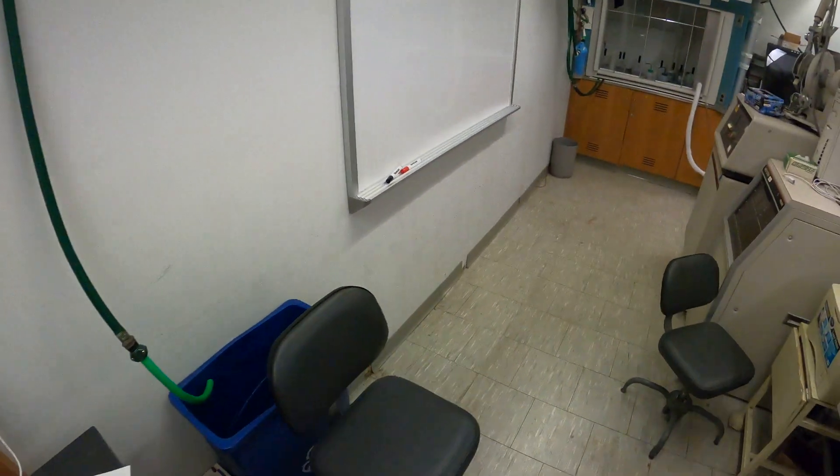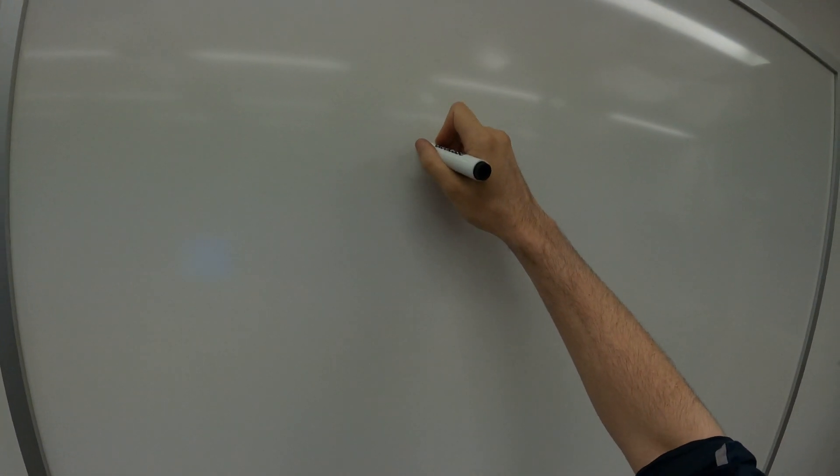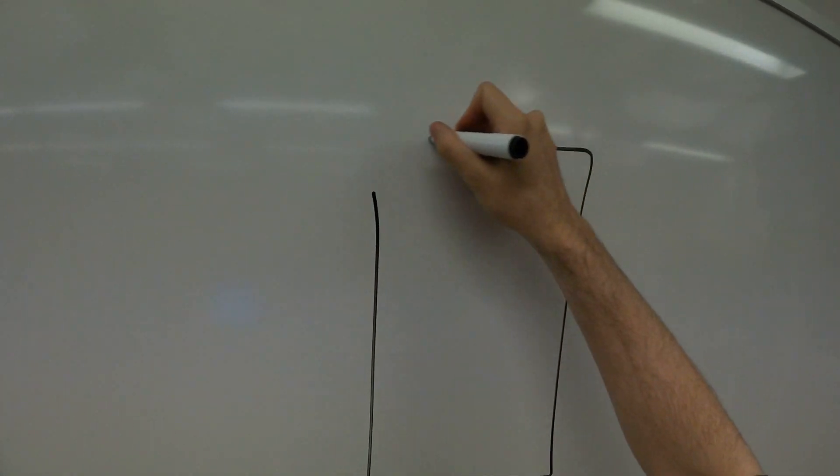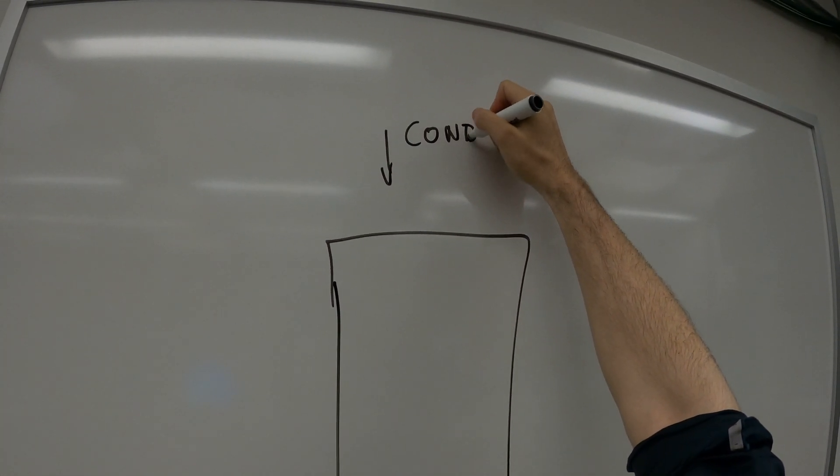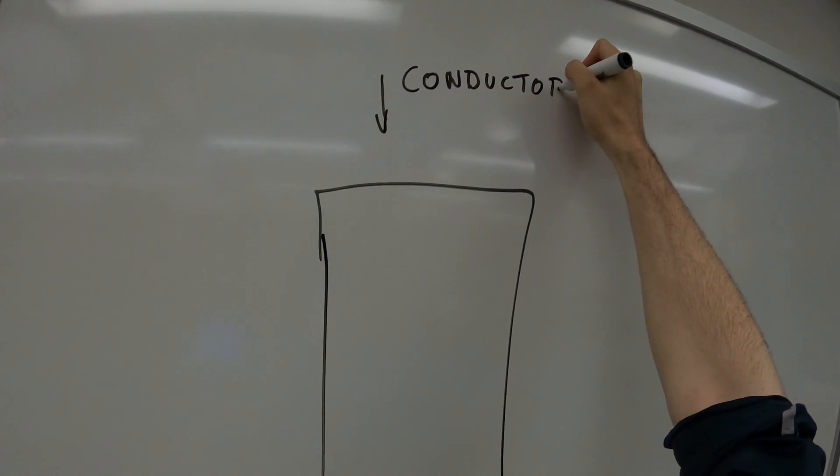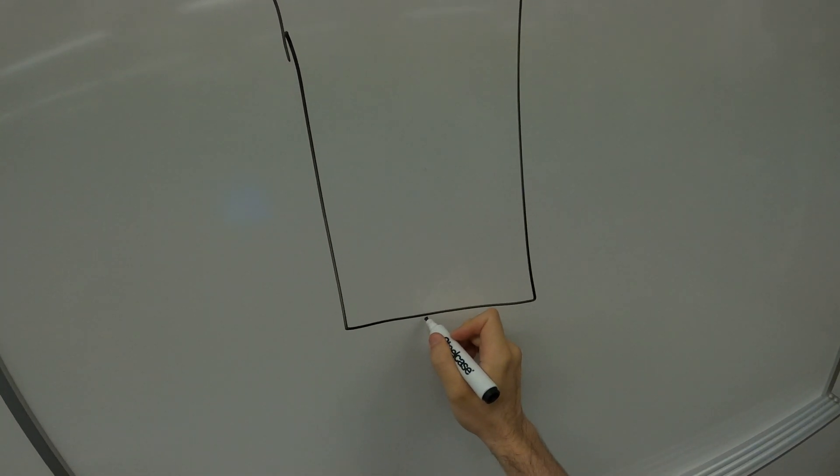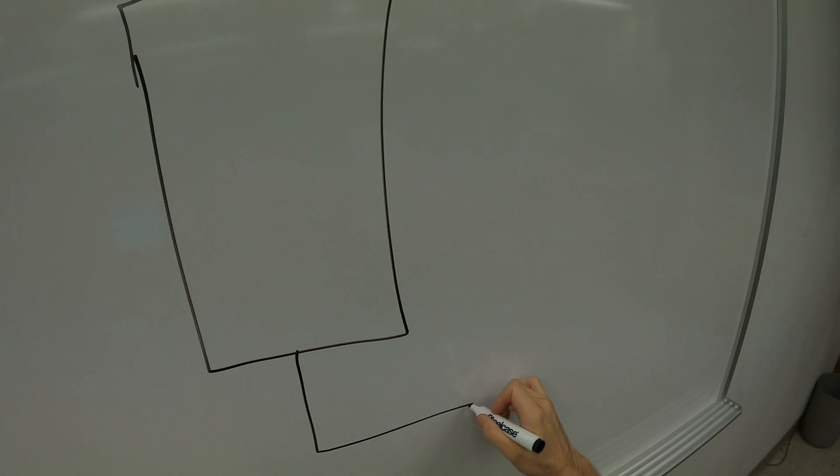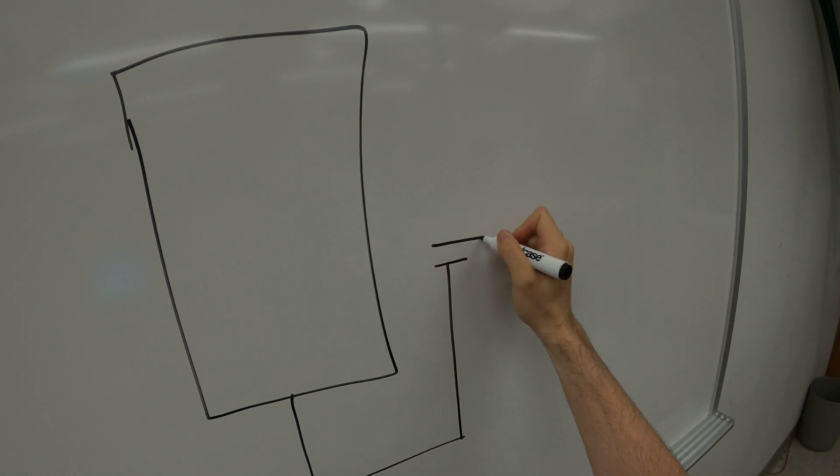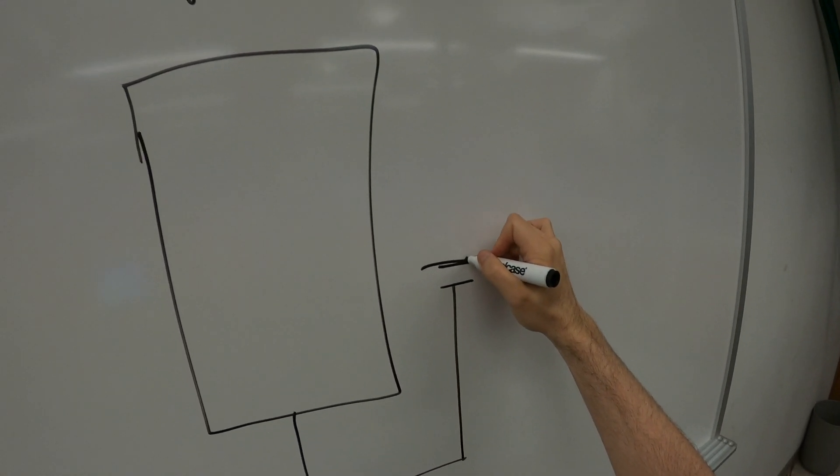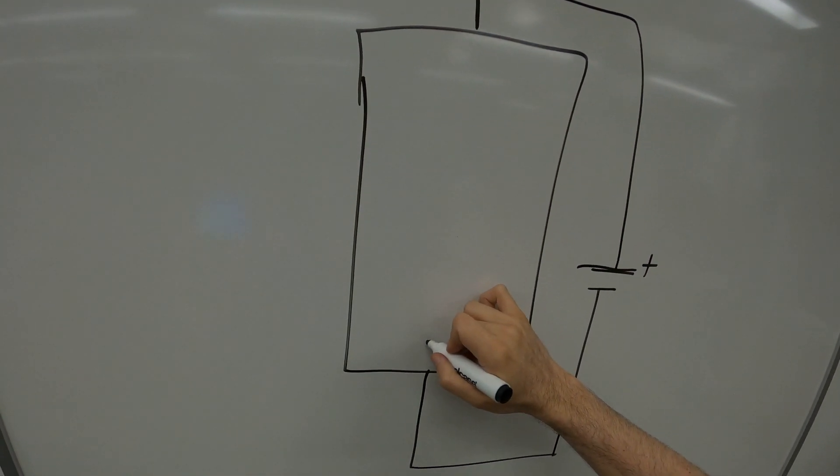If you remember the Hall effect, you take a conducting material. So this is a conductor, and then you establish a current between these two terminals here. Let's say you have plus here so that the electrons will travel in this direction.